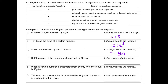Part D: Half the mass of the container decreased by 15. We write half of the mass, represented by M, decreased — which means minus — by 15. Part E: When a certain number is subtracted from 25, the result is 52. So we write 25 minus a certain number, represented by Y, equals 52.